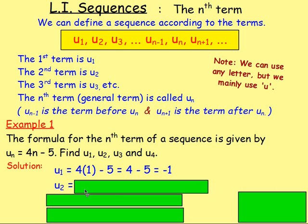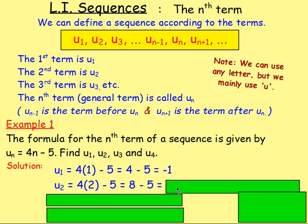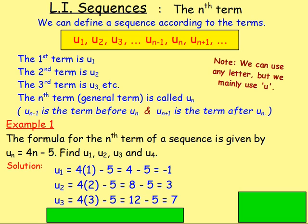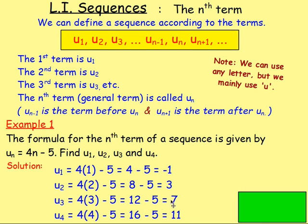To work out U2, well, I'm replacing N with 2. So it's 4 times 2 take away 5. And you would end up with 3. It could do the same thing for U3 by replacing N with 3. So 4 times 3 take away 5. And it could do the same thing with U4. Replace N with 4. These numbers that you get on the end then, negative 1, 3, 7, 11, these are going to be the terms in the sequence. So that's the first term, the second term, the third term, the fourth term.